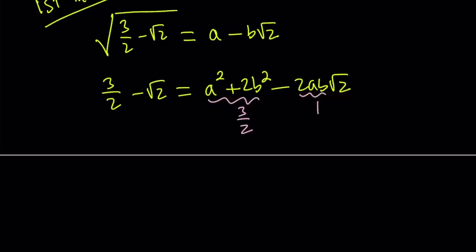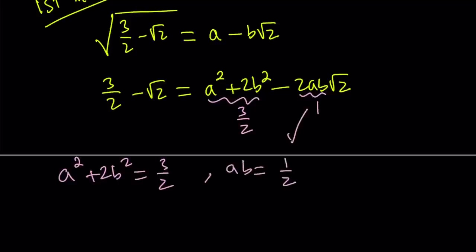Since they both have the minus sign, I can just set it equal to positive 1. And from here, we get a system of equations: a² plus 2b² equals 3/2, and ab equals 1/2. Now, we can go ahead and square both sides of ab = 1/2. That gives us a²b² equals 1/4.